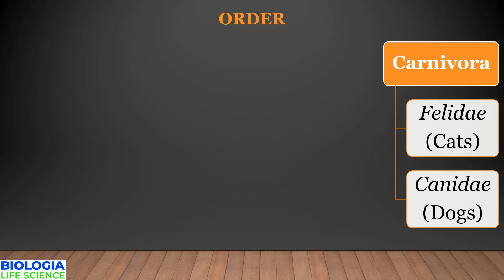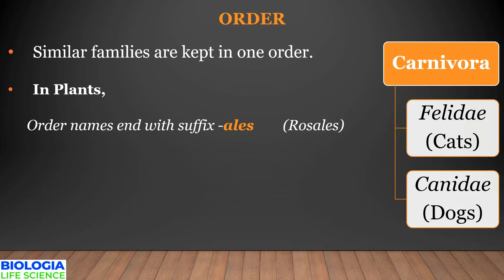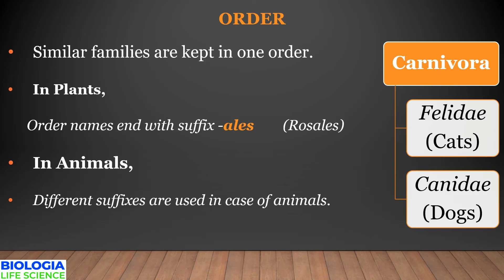The next category is order. Similar families are put in one order, which has fewer common characters compared to family, genus, and species. In plants, the order name ends with the suffix -ales (e.g., Rosales), while in animals there is no specific suffix. For example, family Felidae (cats) and family Canidae (dogs) are both placed in order Carnivora.